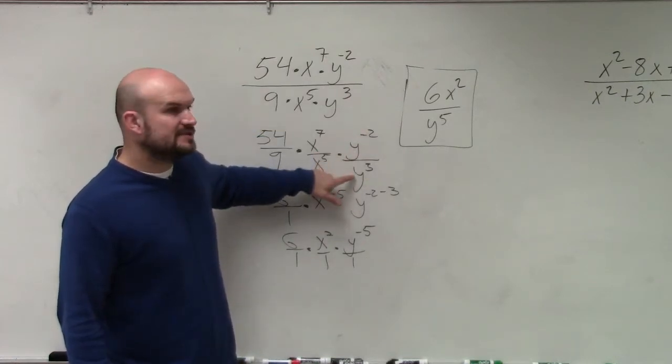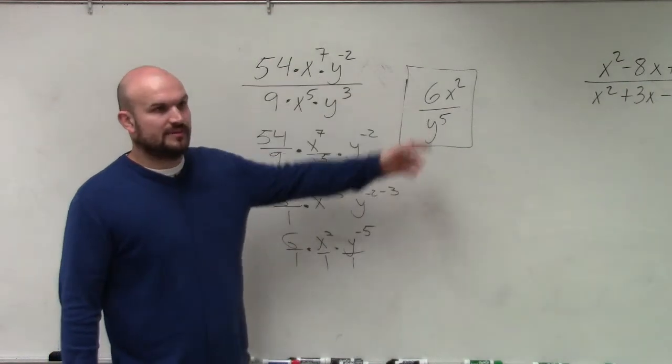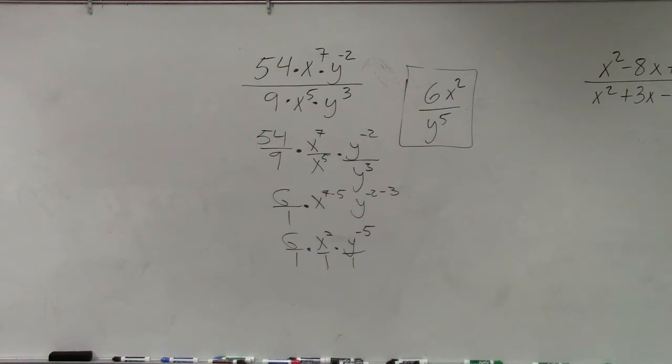You can easily bring the negative 2 down and then add the 2 and the 3, which would give you positive y to the fifth on bottom. But you're still going to be multiplying. Because we cannot write our expression...